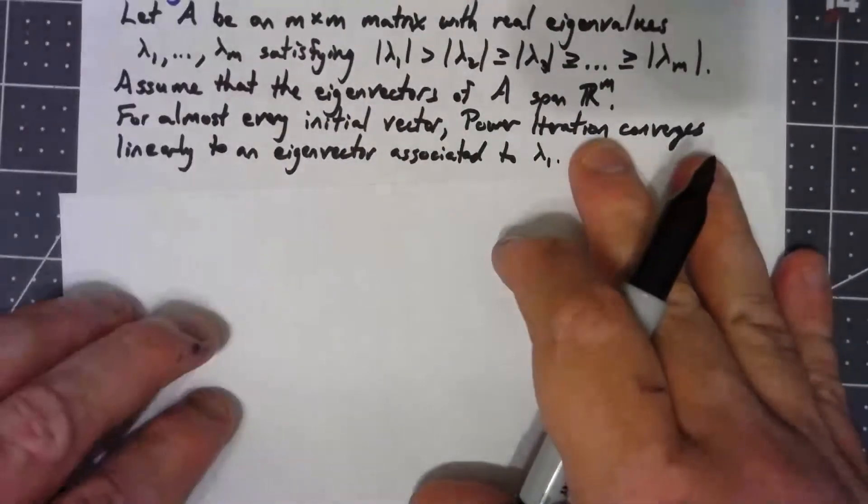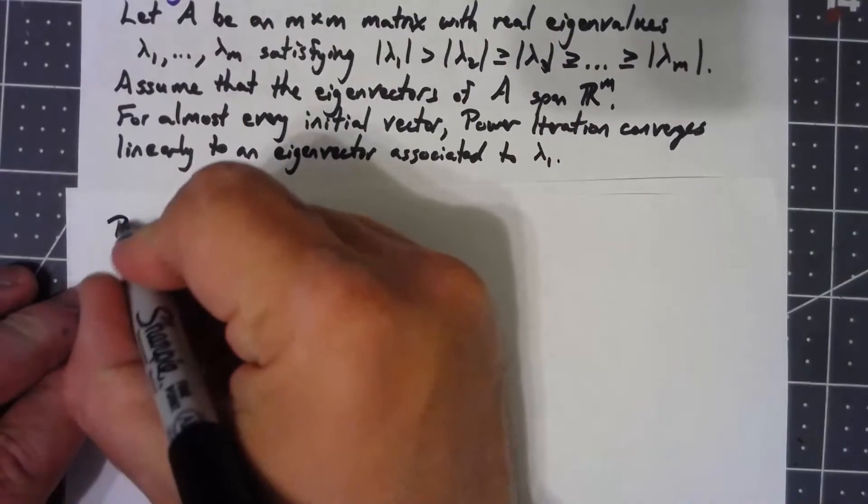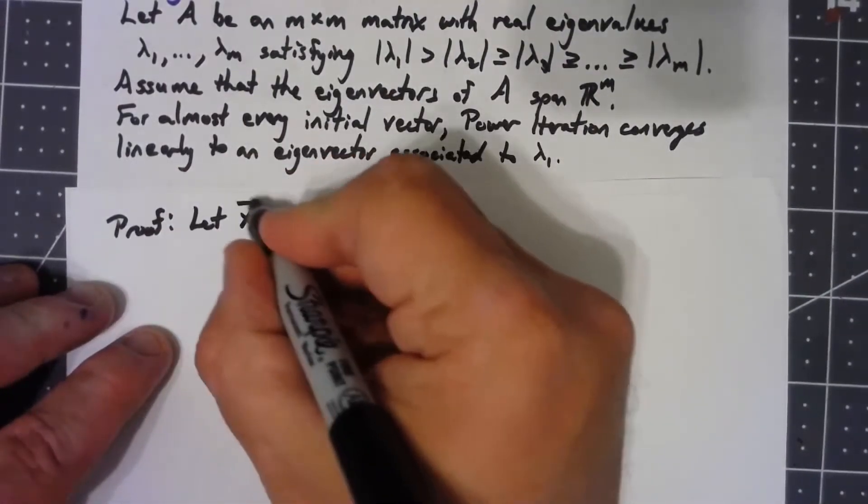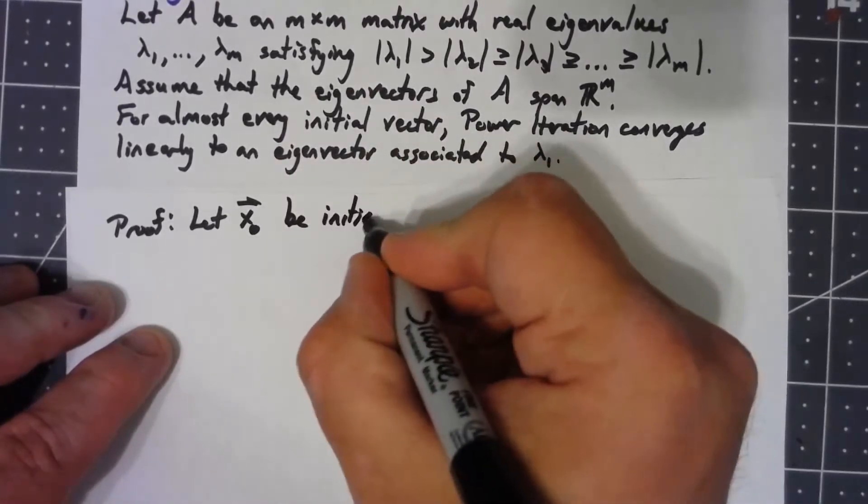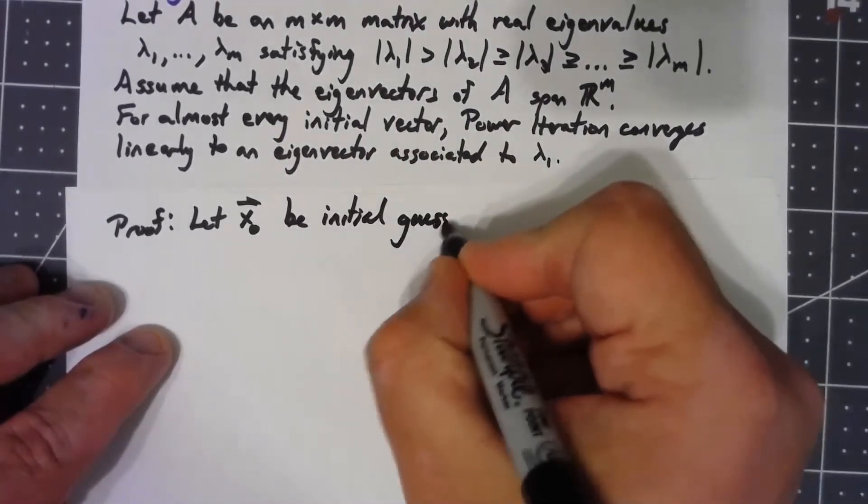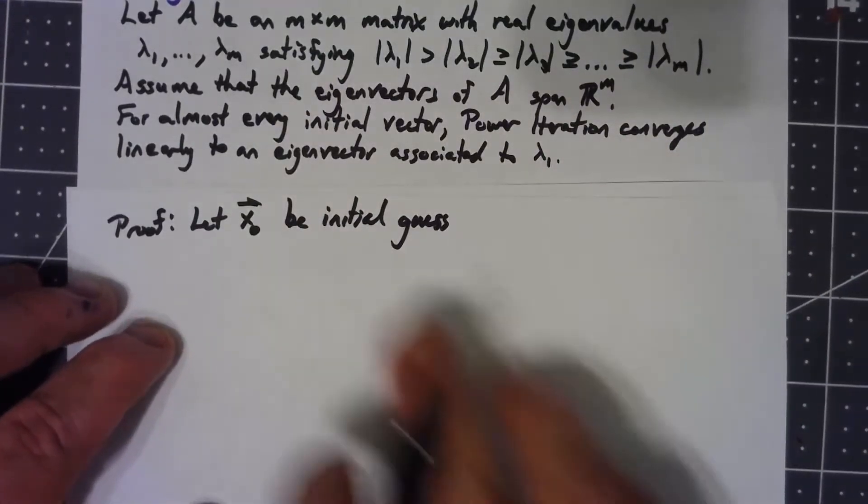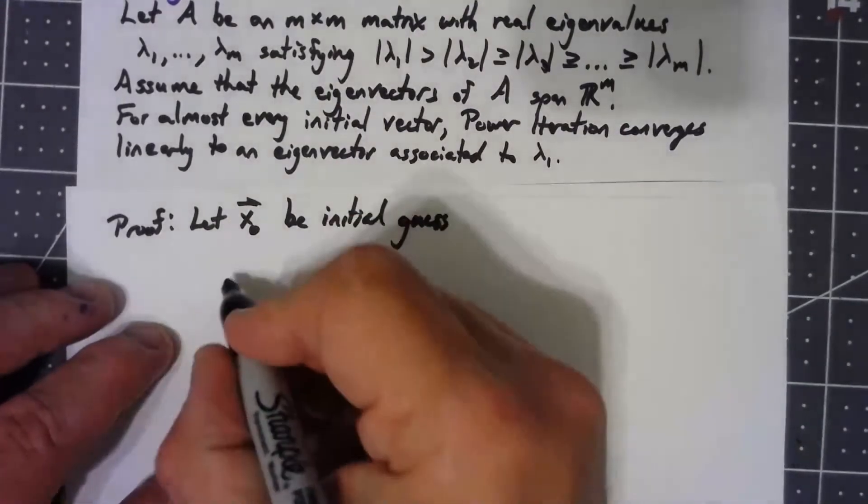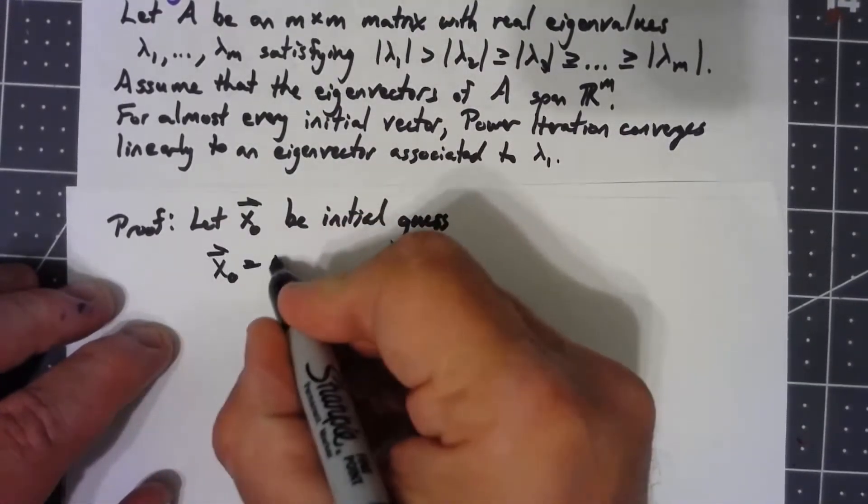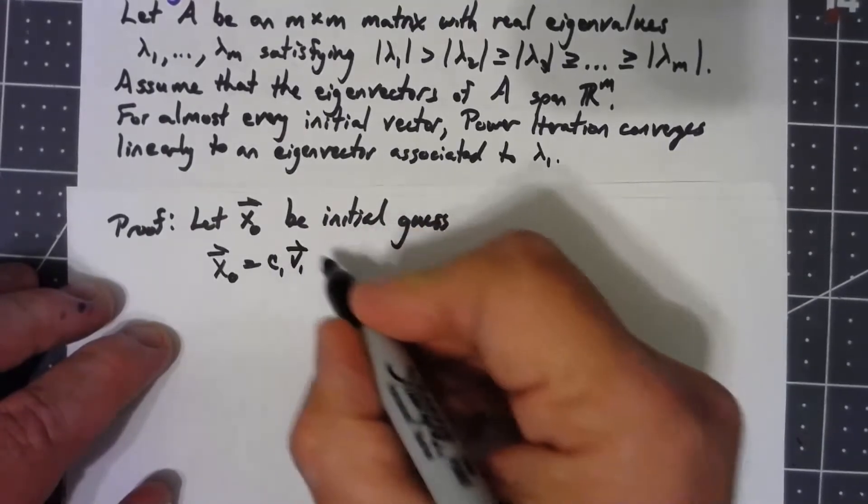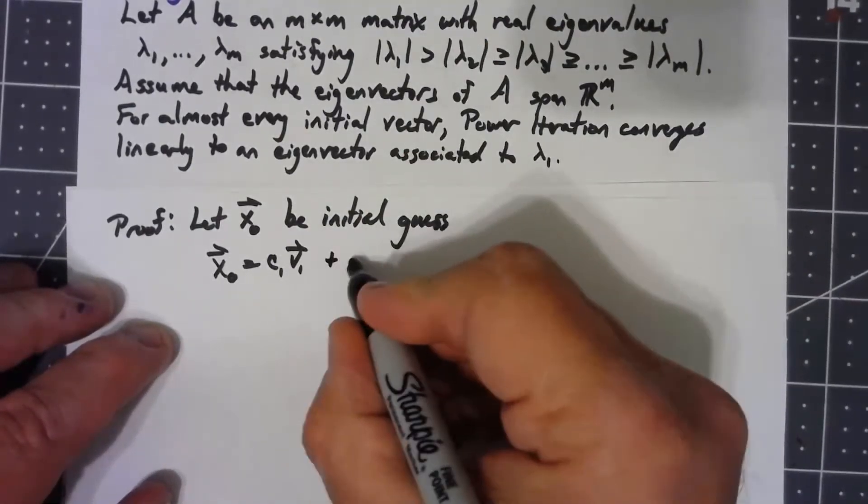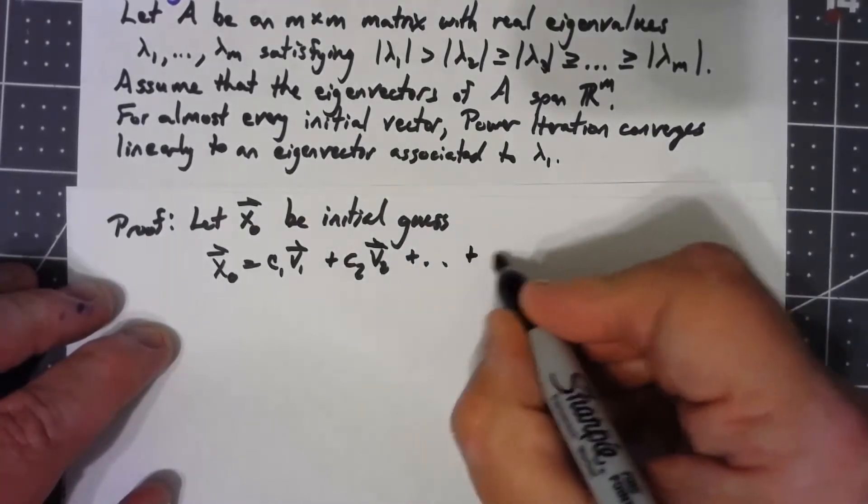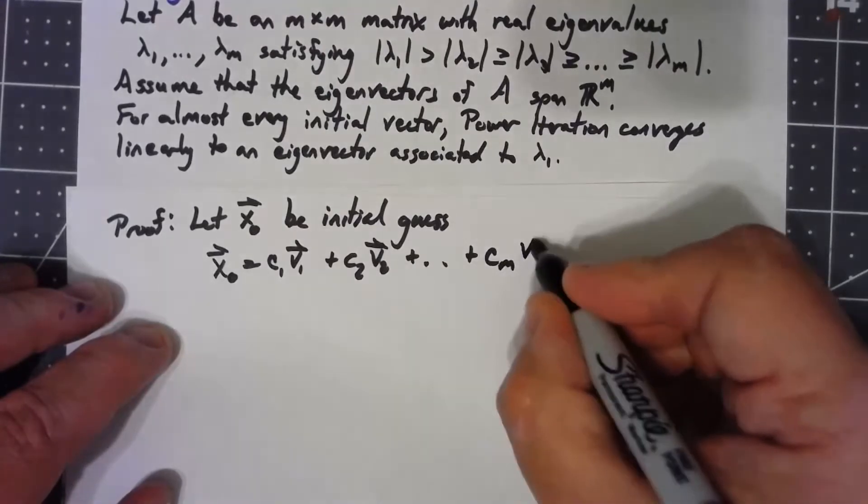To prove this, let x_0 be the initial guess. Because we've got these eigenvectors that span, that must mean x_0 equals some constant times the first eigenvector, the one associated with lambda_1, plus some constant times the second one, all the way up to c_m times v_m.